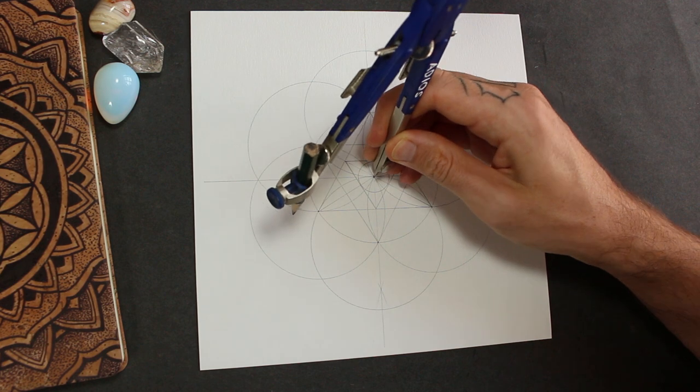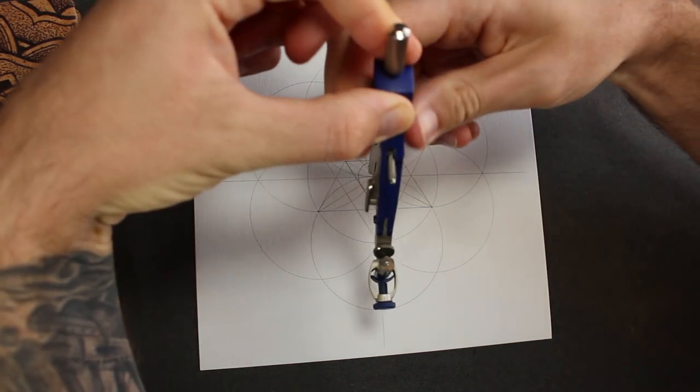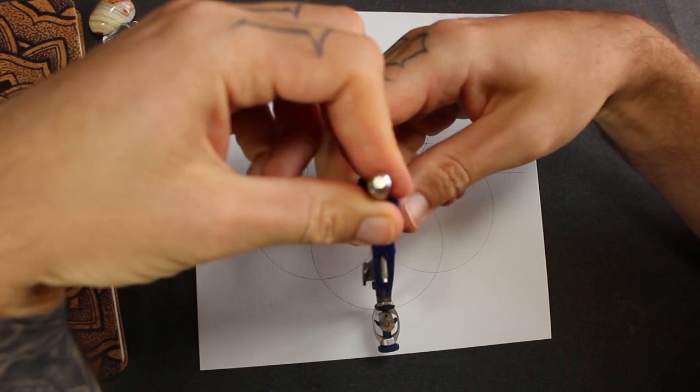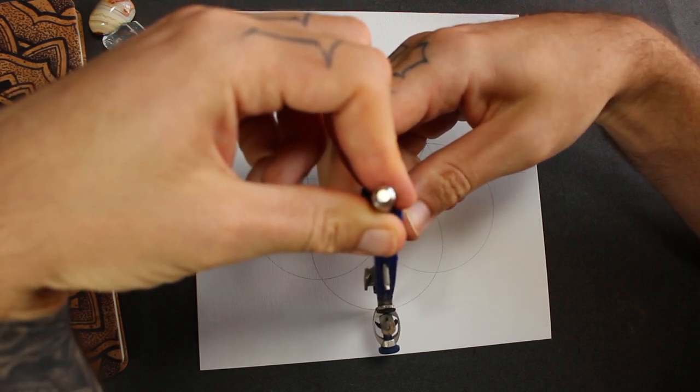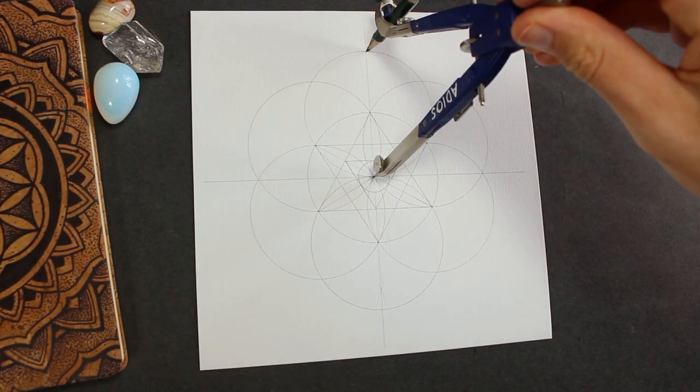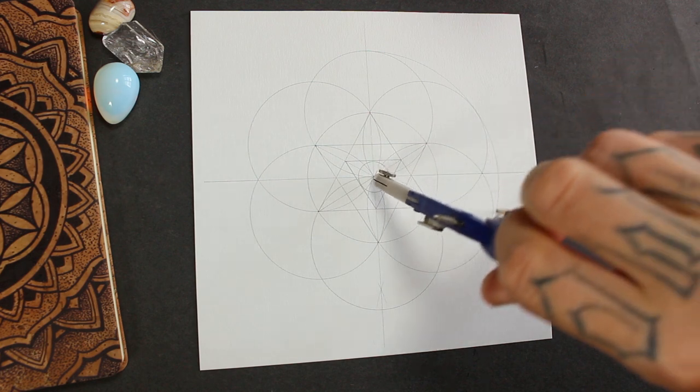And now we're going to put the compass in the center and set it to the point where the seed of life, like the edge of the seed of life, crosses the vertical line. And we'll draw a circle around the seed of life.